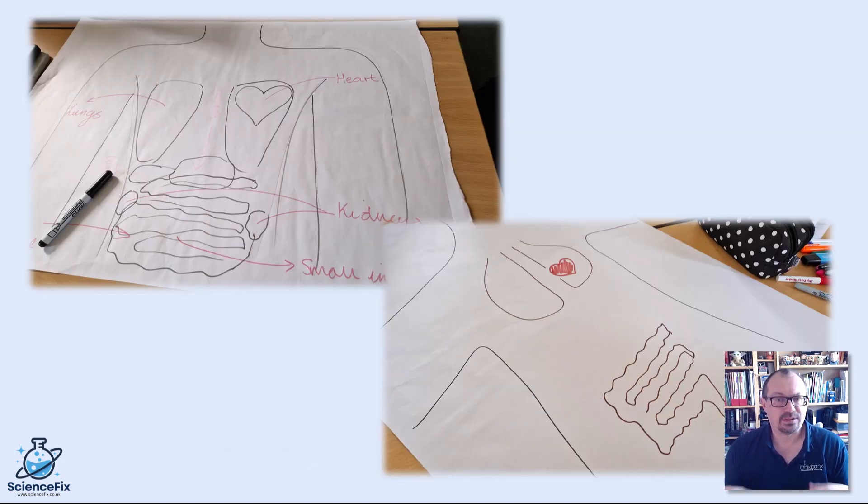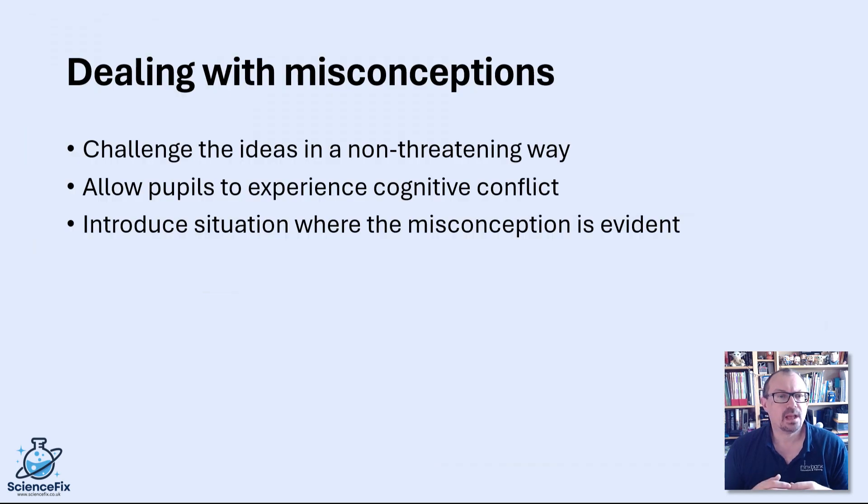So dealing with the misconceptions. How do you correct a misconception when you found out what they are? It's important to challenge the ideas in a non-threatening way. Pupils need to be able to test out their ideas and then experience that cognitive conflict. We shouldn't just tell them that they're wrong and explain what they should think instead. That's counterproductive.